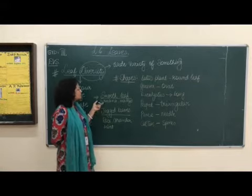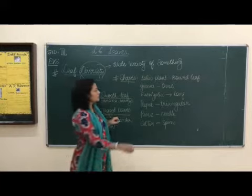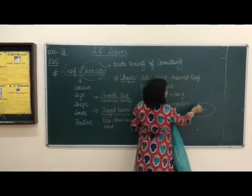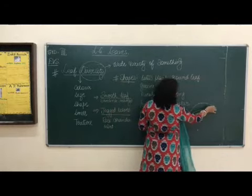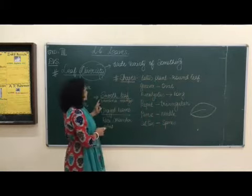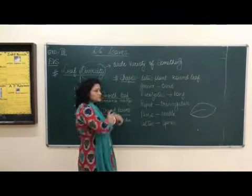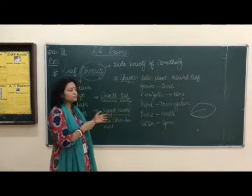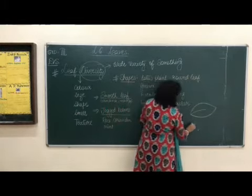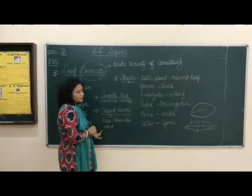Now in this, we also have smooth leaves and jagged leaves. Smooth means the edges are very even — they will not have uneven edges, they are very smooth and even. So this is called smooth. For smooth leaves we can talk about banana and mango — these trees have smooth leaves. Even mango tree also has smooth leaves. Now if we are talking about a jagged edge, like rose, coriander, or mint — these have uneven edges.